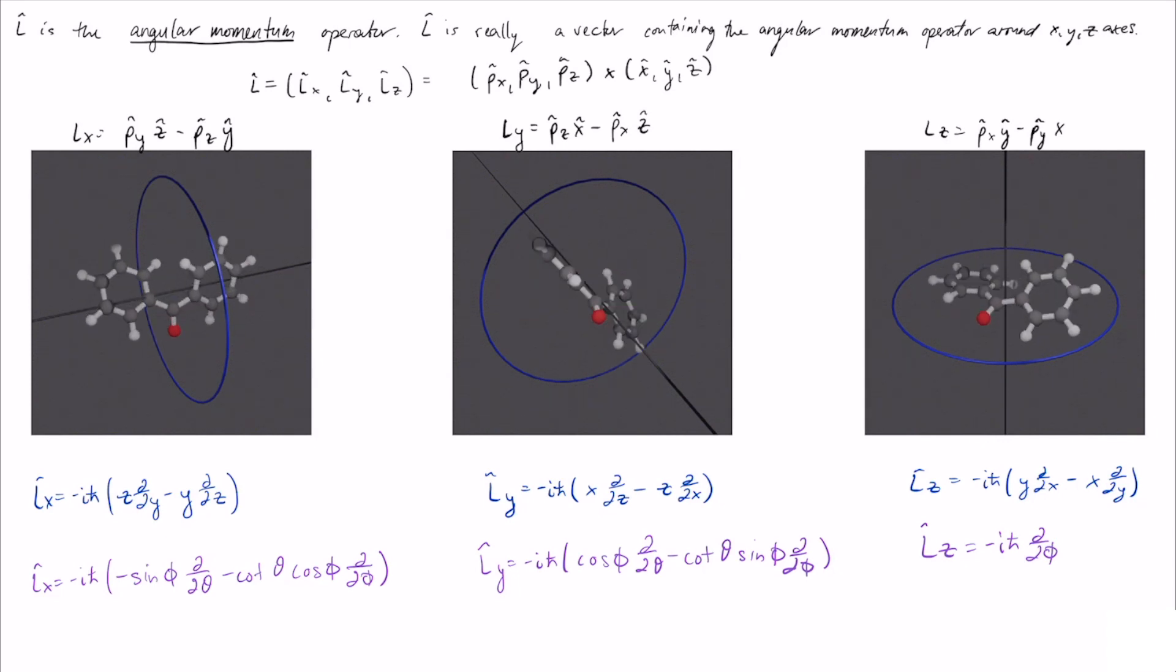Now taking the definitions of the angular momentum from this cross product, we can write the actual operators in two different ways. One in Cartesian coordinates, which is shown here in the dark blue. These are really simple just by plugging in the Cartesian forms for Py and Pz. Then you get Lx, Ly, and Lz, all of these sort of mixed derivatives. Z d/dy minus y d/dz, for example, for Lx.